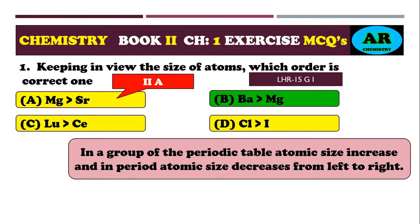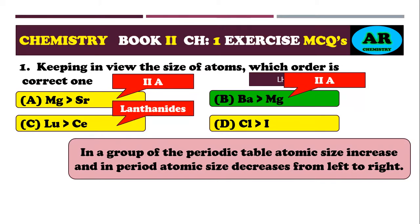Alpha option contains 2A elements. Beta also has 2A elements. Charlie has lanthanides, which are in period number 6. Delta has halogens, which are in group 7A. Beta option is correct.